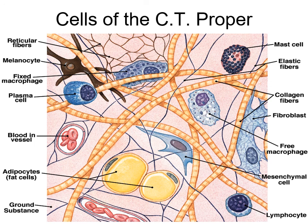Natural killer cells are found in connective tissue, along with T killer cells and T helper cells. We're not sure what that lymphocyte is, so we just call it a lymphocyte. The big adipocytes in the middle are large fat cells filled with triglycerides, pushing the nucleus to the edge - this is called the signet ring formation.